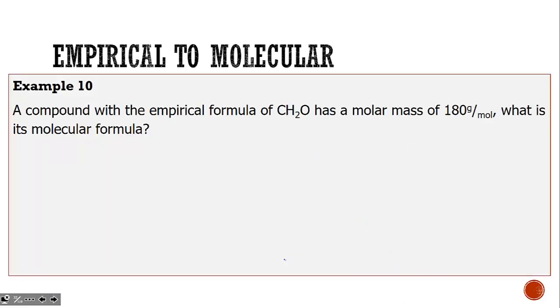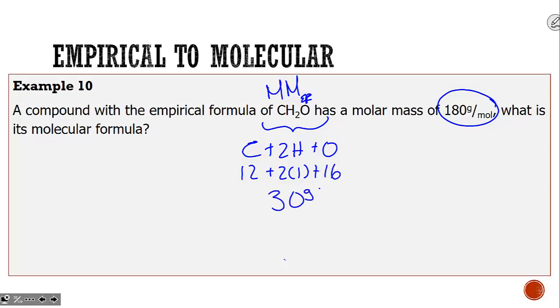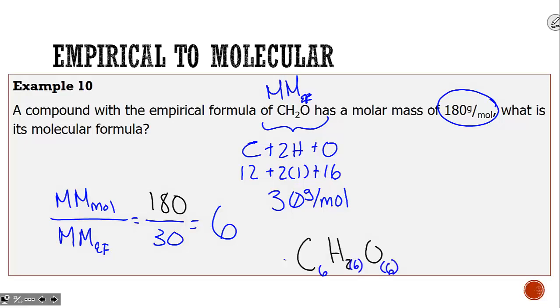Here we have a hydrocarbon, molar mass 180 grams per mole. What is its molecular formula? Our empirical formula is CH₂O: 12 plus 2 times 1 plus 16 is 30 grams per mole. We'll take 180 divided by 30, which tells us they pulled a 6 out. So we plug 6 back into our formula to give us C₆H₁₂O₆.